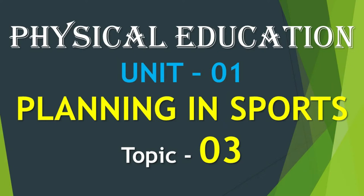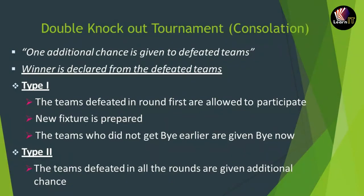Welcome to Learn It. In this topic we will be taking Unit 1 of Physical Education. The name of the unit is Planning in Sports, and Topic 3 covers a special type of knockout tournament also known as the consolation tournament. In this, one additional chance is given to the defeated teams, and the winner is declared from the defeated teams itself after they have already played one match in the tournament.